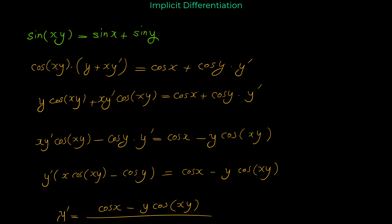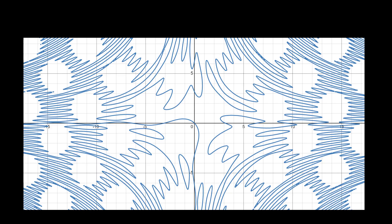Many implicit relations have unusual curves. Before I finish this video, let me show you the graph of this implicit relation. Here you can see the graph of sin(xy) = sin(x) + sin(y). As you can see, this curve is very unusual, and we basically need computers to graph these types of curves. I hope you liked this video, and see you in the next one.